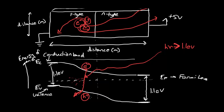Now we have this electron in the conduction band, and because it's in the conduction band it's free to conduct. It's going to try to find its way to the lowest potential point in the system. Since we're drawing the y-direction as potential energy, and higher up means higher potential energy, the electron is going to want to go to the lowest potential possible, so it rolls downhill. The hole will do just the opposite — it will go uphill, because that's its lowest potential.